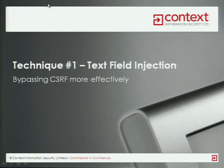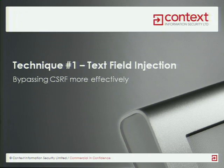Everything I've shown you so far is pretty much what people know about clickjacking at the moment. One of the problems, as I've said before, is that we're relying on cross-site request forgery to get data into a form and then use a click to submit it. But what if we can't use that method to get data into a form? How else can we get data into the form just by using the clickjacking method?